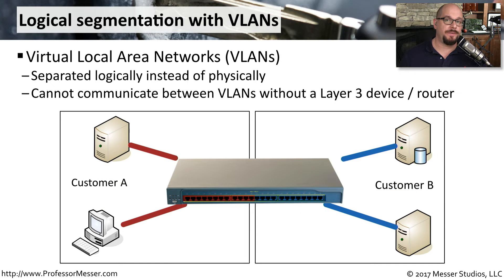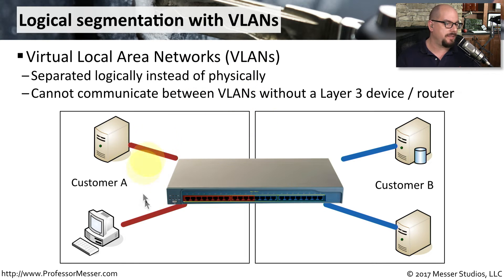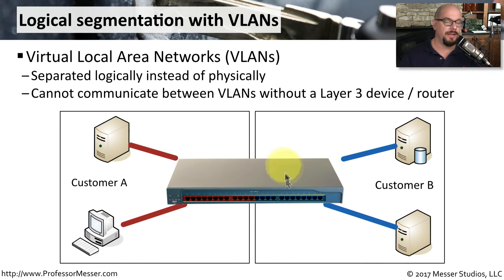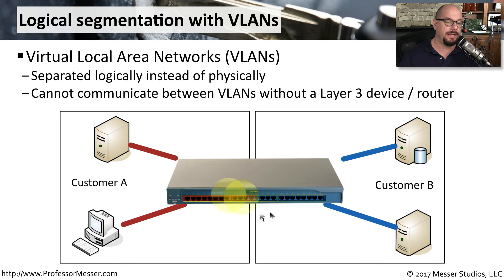Instead of dealing with the inefficiency of physical segmentation, many people will segment the network logically. You can do this by using something like virtual local area networks, or VLANs. You still have segmentation for Customer A and segmentation for Customer B, but this segmentation is built into the switch itself. These two VLANs on the network are not able to communicate with each other, so Customer A's data stays with Customer A's VLAN, and Customer B's data stays on Customer B's VLAN. The only way you would be able to connect these two VLANs together is with a router or some other type of Layer 3 device.